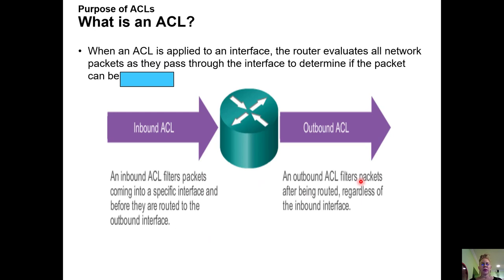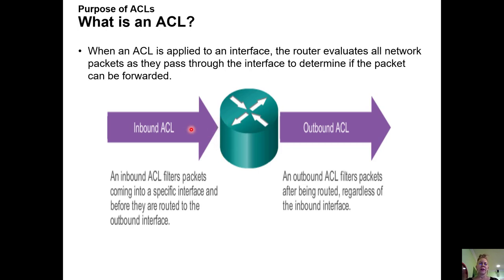When an access control list is applied, we're actually applying it right on the interface — whether it's a serial interface or a gig interface. That's where the work is being done. We apply it and that is when the traffic is looked at. A packet will come into a router, hit an interface, and the interface will assess: do I have an access control list? If so, what are the parameters? Can I allow this traffic to pass through? The same check happens at the exiting interface.